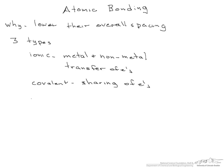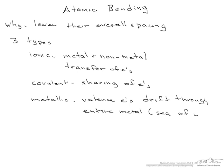Finally, we have what's known as metallic bonding, and here we have the valence electrons. In metals there aren't that many valence electrons, and they drift through the entire metal. And this has been described as a sea of electrons.